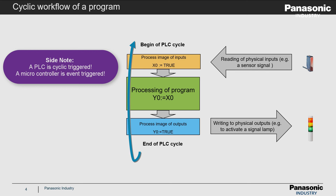In some situations a PLC must work like a microcontroller. In that case you can use an interrupt. With such an interrupt, it is possible to react to a value change of an input immediately within one PLC cycle.